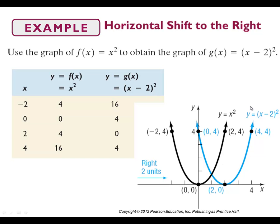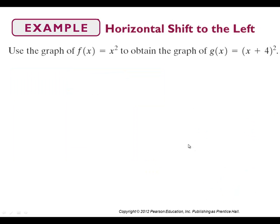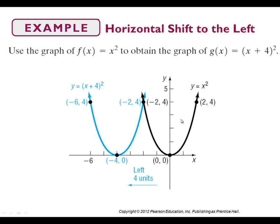Here we have (x plus 4) squared — a parabola that shifts to the left 4 spaces. The vertex moves 1, 2, 3, 4 spaces to the left and we draw the parabola from there. To summarize: if it's inside parentheses with a plus, shift left; if it's minus, shift right. If the number is outside the parentheses, plus means up and minus means down.